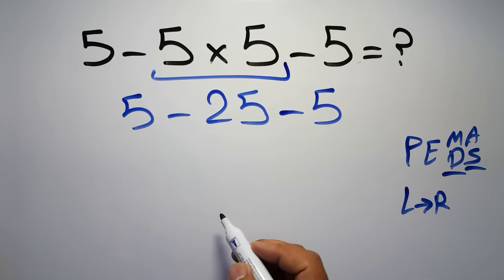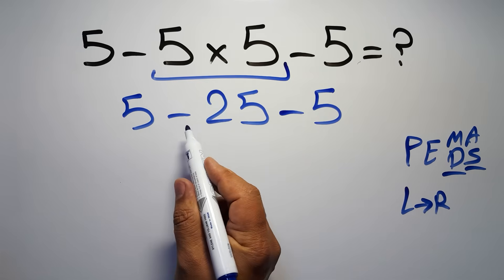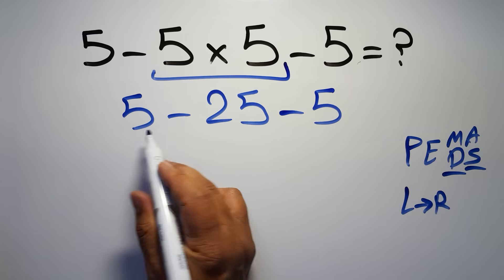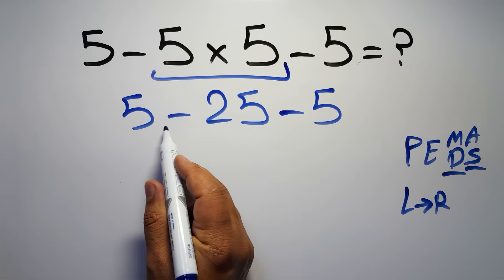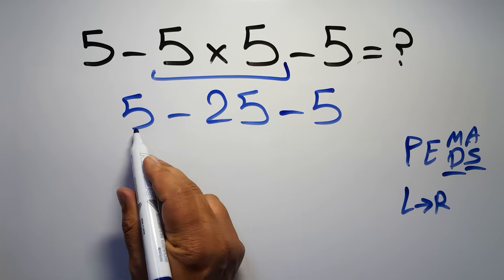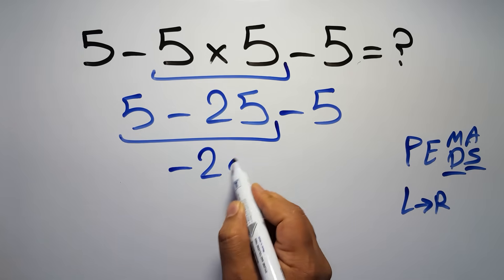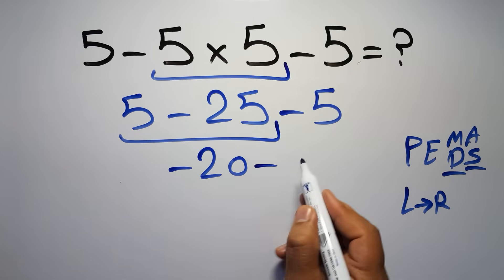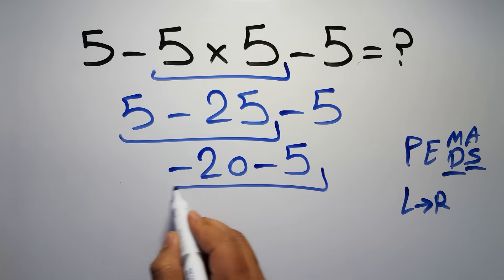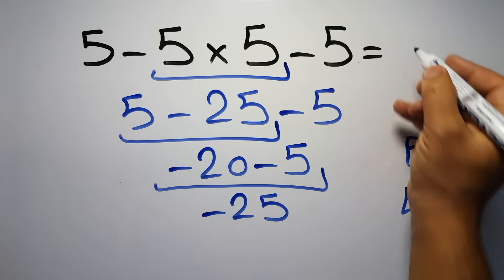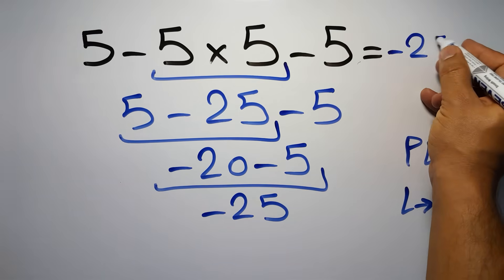Now we have two subtractions, and when we have more than one subtraction in an expression, we have to work from left to right. So here, first we do this subtraction. 5 minus 25 is negative 20. So negative 20 minus 5, which gives us negative 25. And this is our final answer to this problem. The correct answer is negative 25.